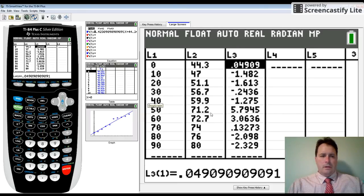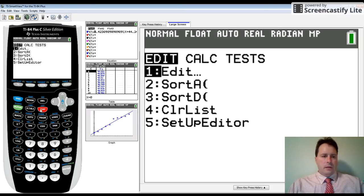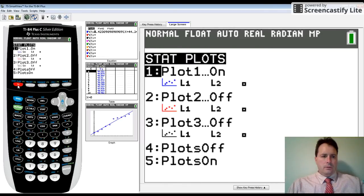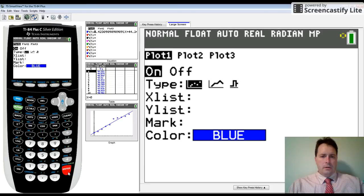If I want to analyze this a little bit more, I could make a residual plot. To do that, you need to go to second y equals. You want to change this plot, plot one. You want to go to your y list and change that to residual.